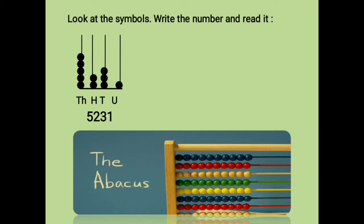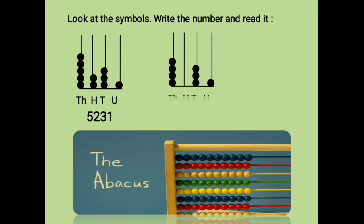Let us see one more example. In the units place we have one bead, in the tens place we have three beads, in the hundreds place there are no beads so it will be 0, and in the thousands place we have four beads. So the answer will be 4031.